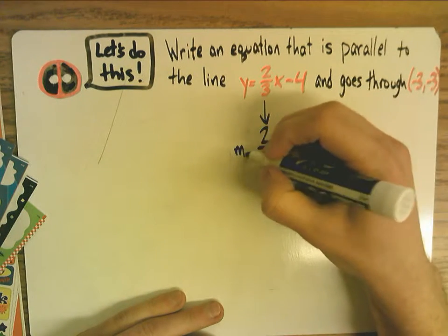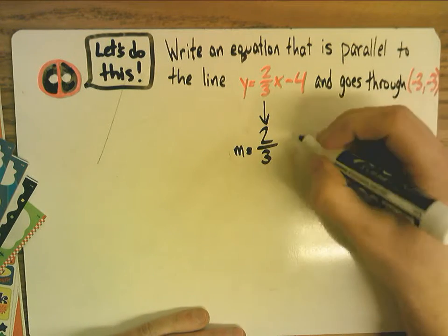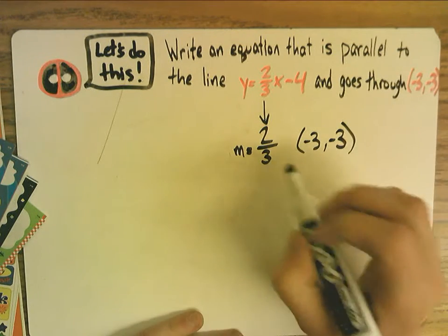With a parallel line, the slope is the same. So we're still going to use two-thirds for the slope. And the new point that we're going to use is negative three, negative three. So now you have a point and a slope.